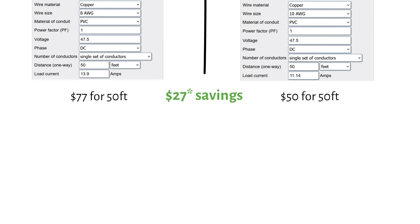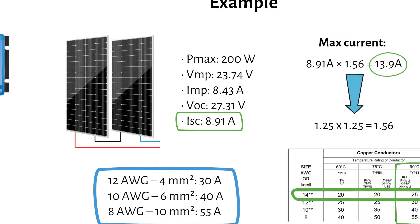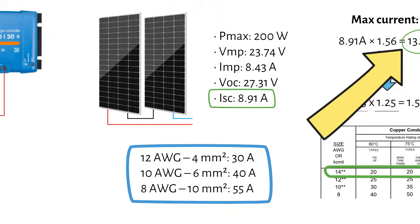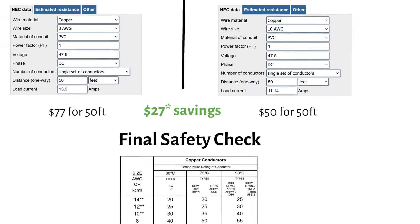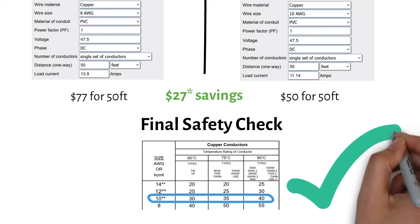Before we're done, we have to do one last check. We need to make sure the calculated cable of 10 gauge or 6 mm square can carry the maximum current in the wire. Remember the previously calculated maximum current of 13.9 amps? Let's see if this cable can handle the current. From the table, 10 gauge can carry 40 amps. So we're good here.